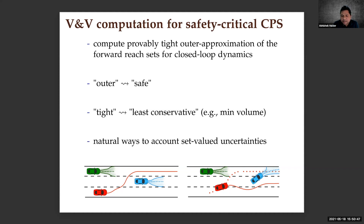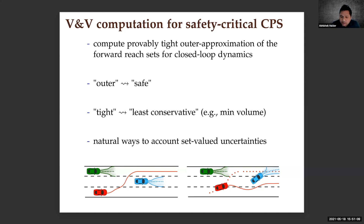Minimizing conservatism naturally leads to an optimization problem. Typical criteria include minimum volume, and depending on the shape chosen there could be other criteria to optimize. This formulation accounts for set-valued uncertainties in initial conditions, parameters, disturbances, or actuations.